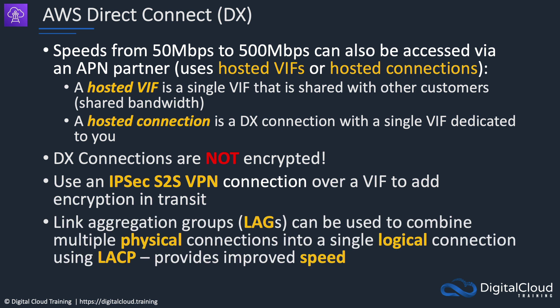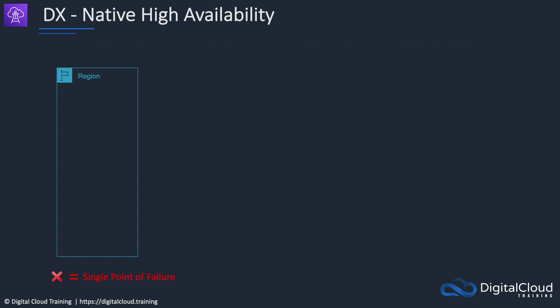Link Aggregation Groups, or LAGs, can be used to combine multiple physical connections into a single logical connection using the Link Aggregation Control Protocol (LACP). This is for improved speed - it's not going to give you improved high availability. So remember that LAGs are not a high availability configuration, but they give you better speed and better bandwidth.